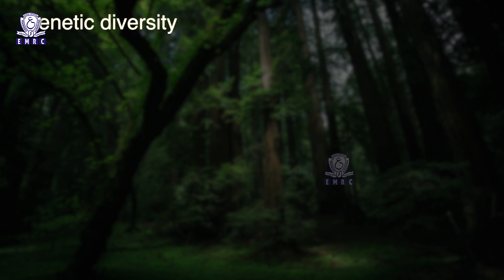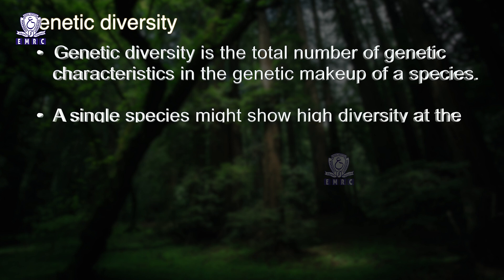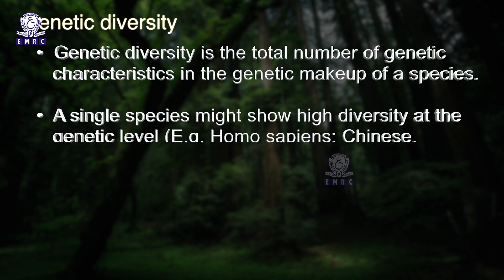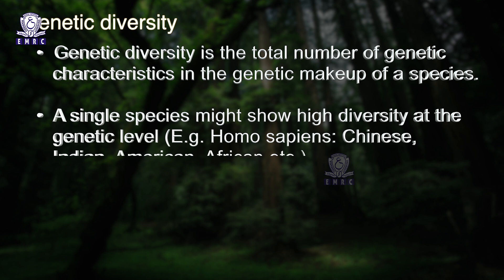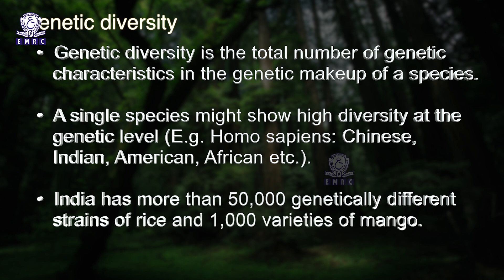Genetic diversity is the total number of genetic characteristics in the genetic makeup of a species. A single species might show high diversity at the genetic level. For example, Homo sapiens — there are Chinese, Indian, American and African versions of Homo sapiens. India has more than 50,000 genetically different strains of rice and 1,000 varieties of mango. Genetic diversity allows species to adapt to changing environments, ensuring that some species survive drastic changes and carry on desirable genes.